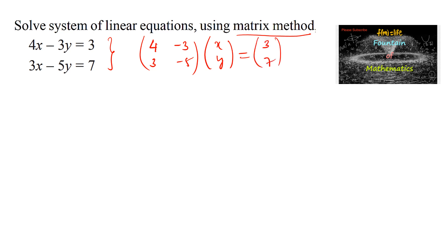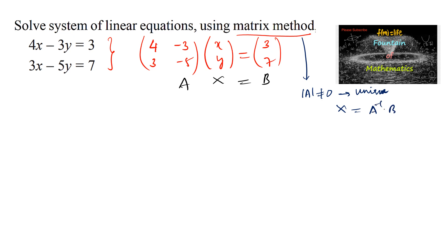This is in the form Ax equals b, where A is the coefficient matrix, x is the variable matrix, and b is the constant matrix. In the matrix method, when the determinant of A is not equal to 0, we have a unique solution, found using x equals A inverse times b, where A inverse is 1 over det(A) times the adjoint of matrix A.